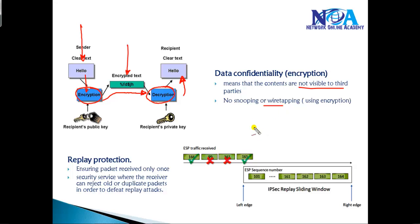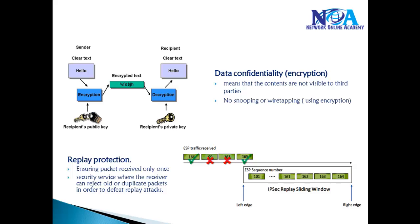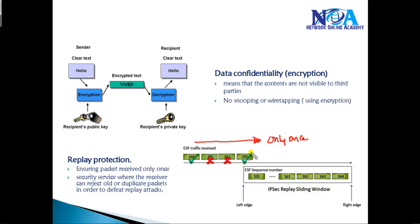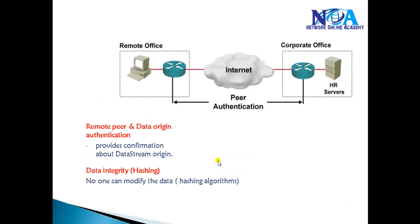Apart from that, IPSec also provides replay detection. Replay detection ensures that when you're sending information it is received only once. There is a type of attack called a replay attack where an attacker can resend the same information for authentication. This is avoided through a security service where the receiver will reject old or duplicate packets in order to overcome those replay attacks.